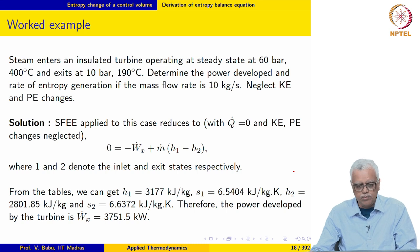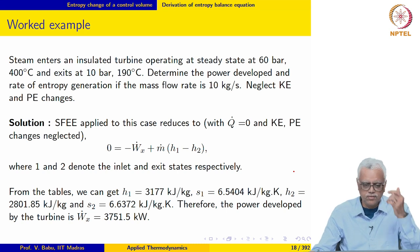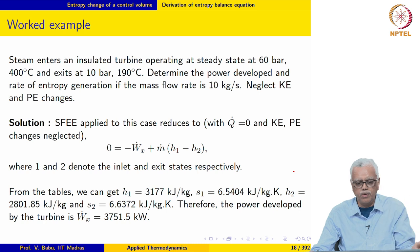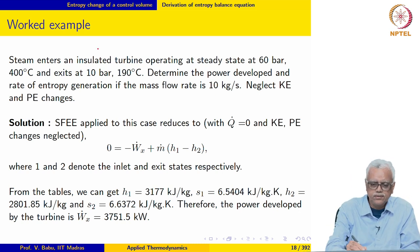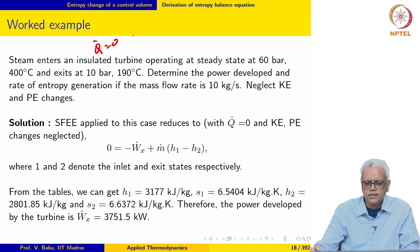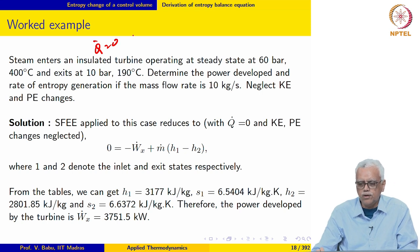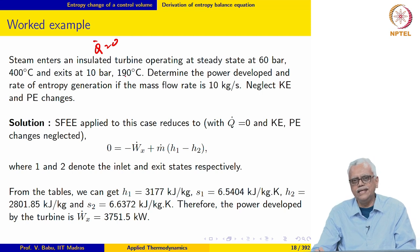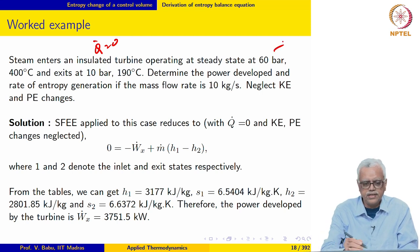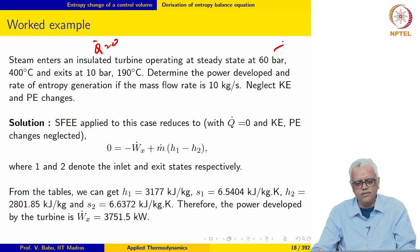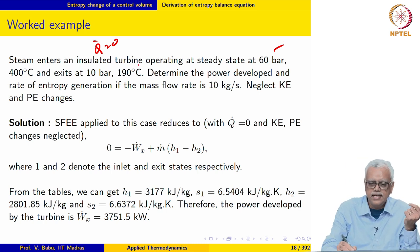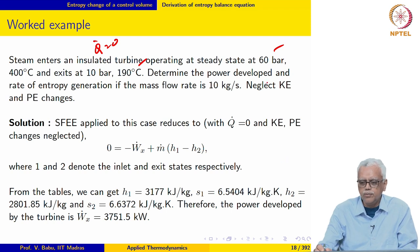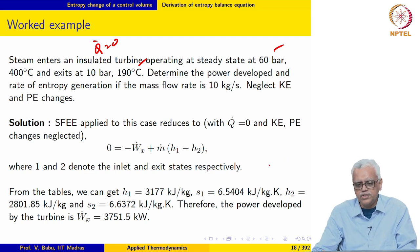The next example involves a steam turbine. Steam enters an insulated turbine operating at steady state at 60 bar, 400°C, and exits at 10 bar, 190°C. Based on the property values, the steam is superheated at both inlet and exit. Determine the power developed and rate of entropy generation if the mass flow rate is 10 kg/s. KE and PE changes may be neglected.